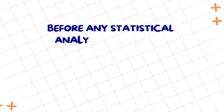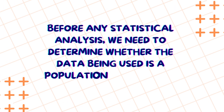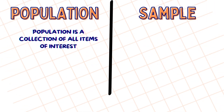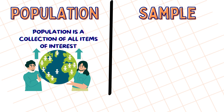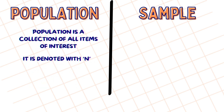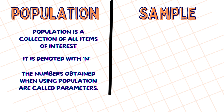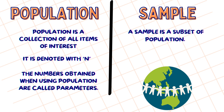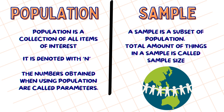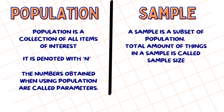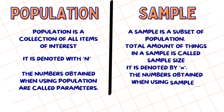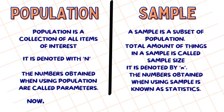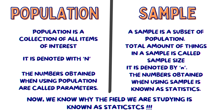Before any statistical analysis, we need to determine whether the data being used is a population or a sample. Population is a collection of all items of interest. It is denoted with capital letter N, and the numbers obtained when using population are called parameters. A sample is a subset of a population. The total amount of things in a sample is called sample size. It is generally denoted with a small letter n, and the numbers obtained when using a sample are known as statistics — which is now we know why the field we are studying is known as statistics.